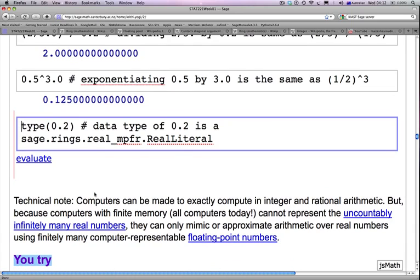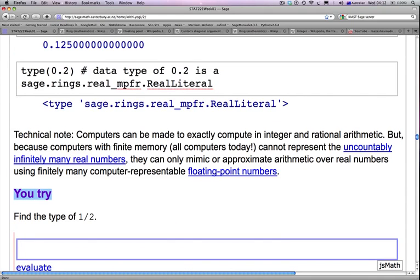Now, if you ask SAGE, what is the type of 0.2, it'll tell you that the type is a SAGE RINGS REAL MPFR REAL LITERAL. MPFR stands for Multi-Precision Floating Point Real, and a technical note here is that computers can be made to exactly compute integer or rational arithmetic, but because computers have finite memory, they cannot represent the uncountably infinitely many real numbers in memory, and they can only mimic or approximate arithmetic over real numbers using the finitely many computer-representable floating point numbers.